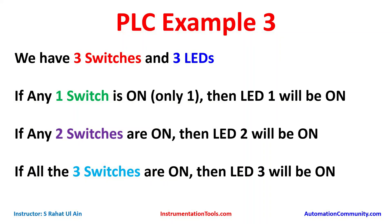Let's start Example 3. We have three switches and three LEDs. If any one switch is on — that is, only one — then LED 1 will be on. If any two switches are on, then LED 2 will be on. If all three switches are on, then LED 3 will be on. Switch 1, Switch 2, and Switch 3 control LED 1, LED 2, and LED 3 respectively based on how many are active.